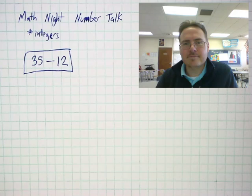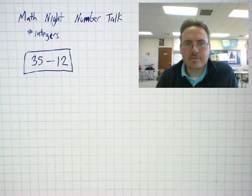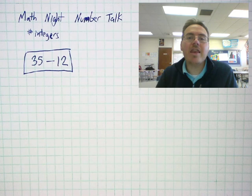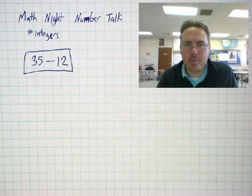Well, here it is, 35 minus 12. Now, like I said, I want you to come up with the answer, and then see if you can come up with another way to get that answer. Really think about how you came up with it.